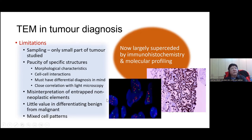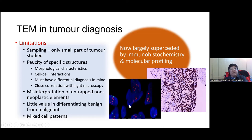Today we don't use electron microscopy very much for tumour diagnosis, as this has been largely superseded by immunohistochemistry and molecular profiling and mutational studies. It's so much simpler — if you want to know whether a tumour is mesothelioma or adenocarcinoma, you can just do immunohistochemical stains like calretinin or TTF1 and have confidence in the diagnosis without going through the long process of electron microscopy. With in situ hybridisation techniques and other ancillary methods available, we can decipher a lot more about the tumour than just ultramorphology.